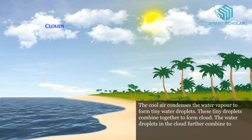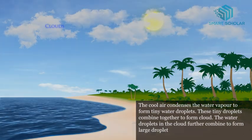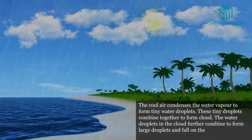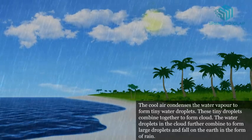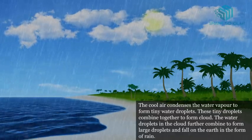The water droplets in the cloud further combine to form large droplets and fall on earth in the form of rain.